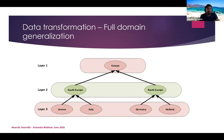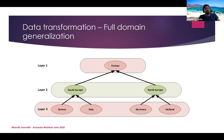Now I'll discuss how Amnesia achieves K-anonymity. All algorithms based on generalization rely on instructions for replacing specific values with more generic ones, which we call a generalization hierarchy. Here is a simple example where countries are grouped into larger administrative regions, and this semantic information is given to the algorithm. If it needs to generalize a country value, the algorithm knows which greater region it belongs to and iteratively applies as many generalizations as needed to achieve the desired privacy guarantee.